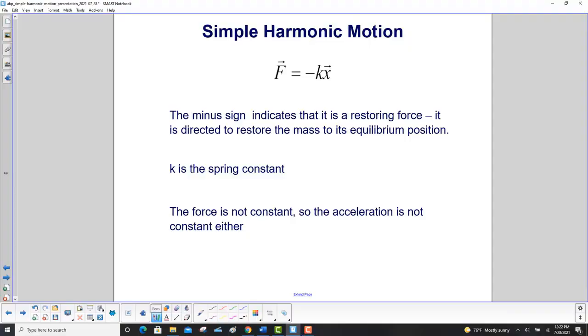The minus sign in Hooke's law indicates that it's a restoring force. It is directed to restore the mass to its equilibrium position. K, of course, is the spring constant and very important. The force is not constant as it depends on the position, so the acceleration is not constant either.